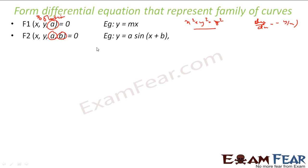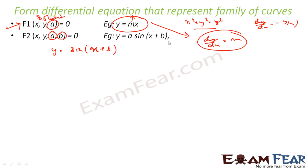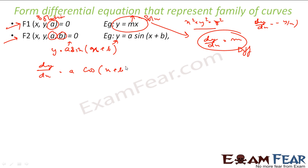Let us take an example where you have two variables. Suppose we have this equation: y = a·sin(x + b). Here there are two variables a and b. So we will differentiate twice to get rid of these variables. Differentiating once: dy/dx = a·cos(x + b) — I still have this variable. Let us differentiate again.